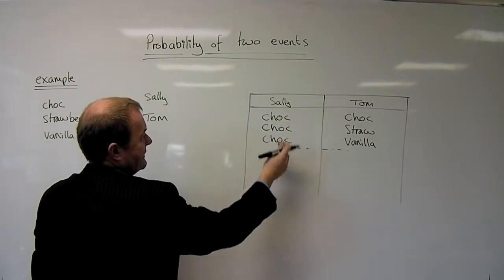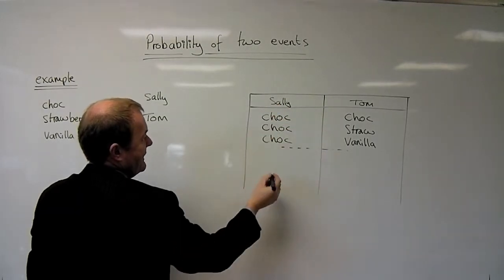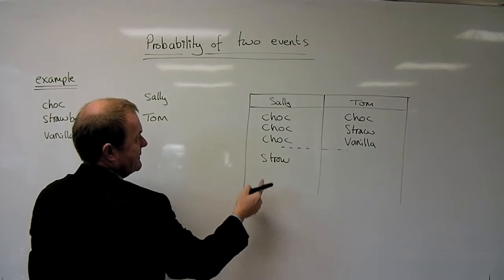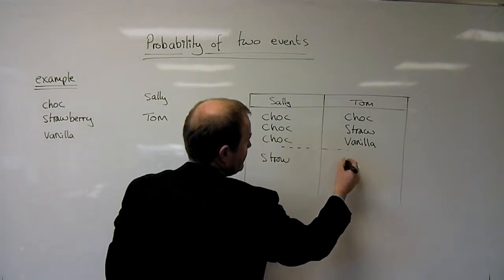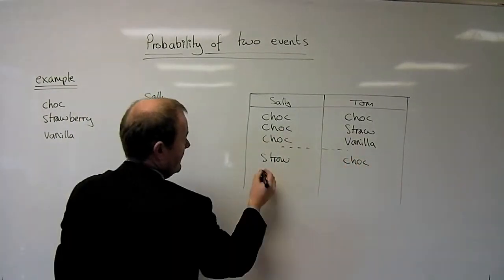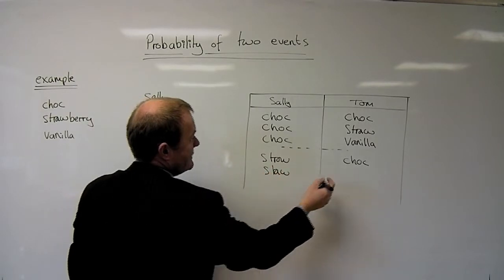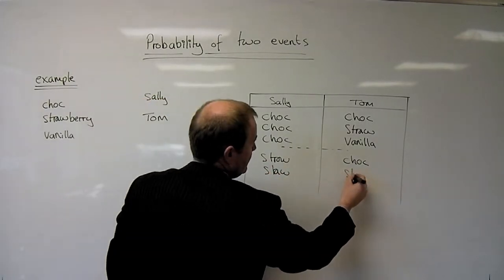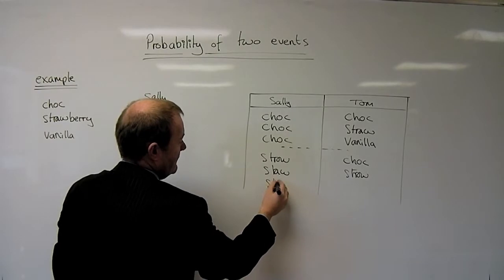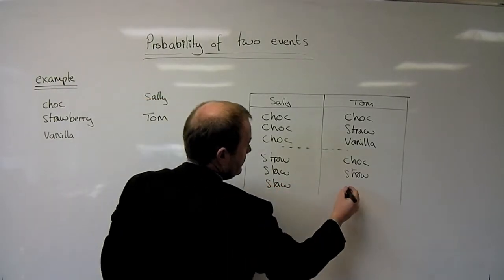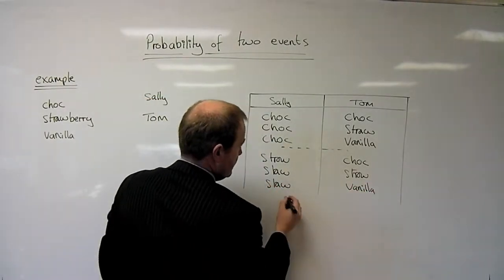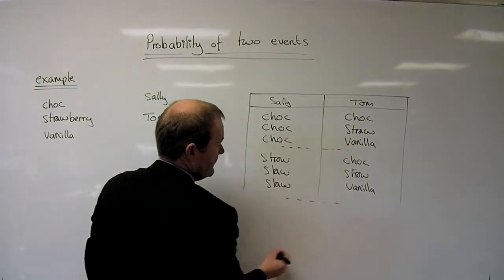Then I cycle Sally's choice. Sally might choose strawberry. If Sally chooses strawberry, Tom might still choose chocolate. If Sally chooses strawberry, Tom might choose strawberry. And if Sally chooses strawberry, Tom might choose vanilla. That's my second group of outcomes.